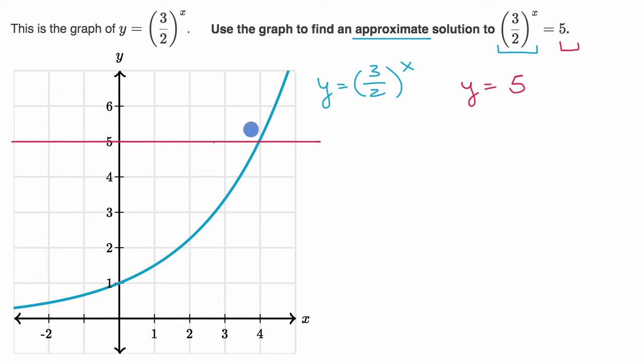And we can see it, at least over here, it looks like x is roughly equal to four. So x is approximately equal to four.